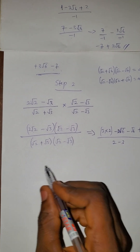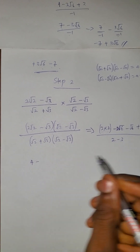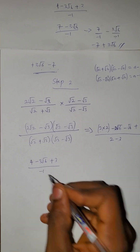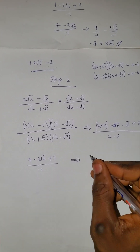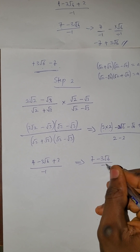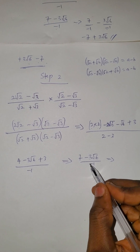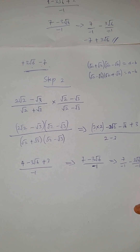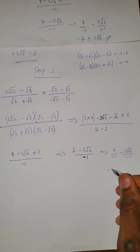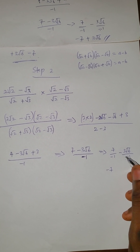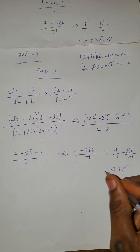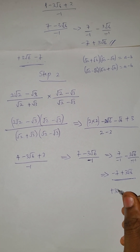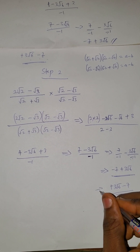So the denominator is 2 minus 3 = minus 1. The numerator: 2 times 2 is 4, minus 2√6 minus 1√6 is minus 3√6, plus 3. So we get 4 plus 3 = 7, minus 3√6, all over minus 1. Dividing: 7 over minus 1 is minus 7, and minus 3√6 over minus 1 is plus 3√6. So minus 7 plus 3√6, which interchanged is 3√6 minus 7 — confirming option B.